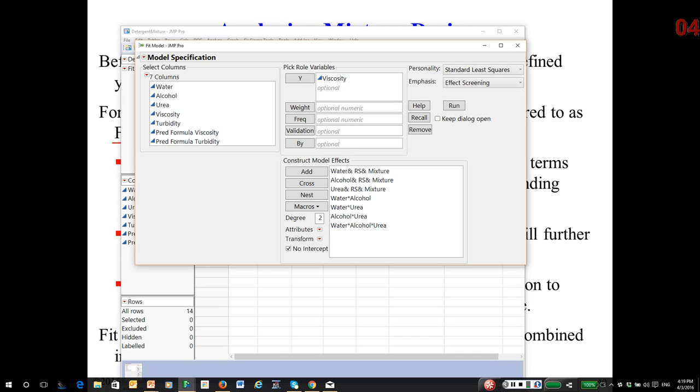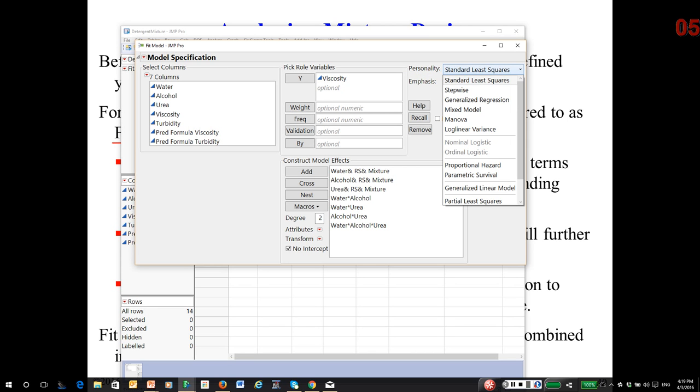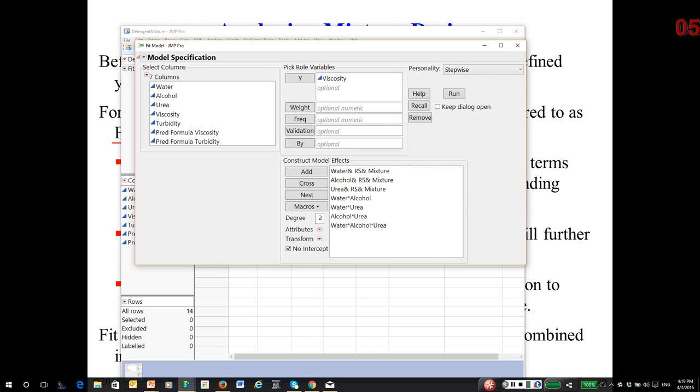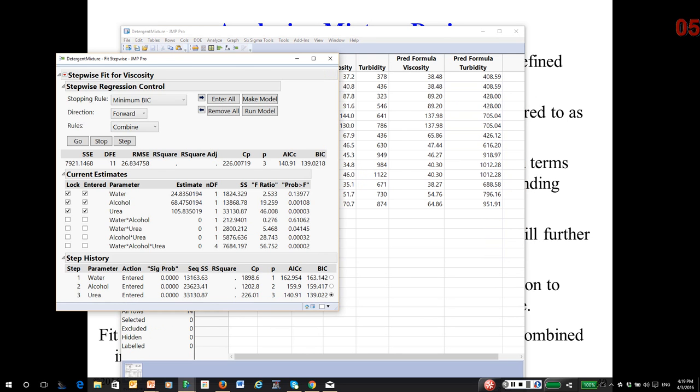But up where you see Fitting Personality, click on Standard Least Squares and switch to Stepwise. So at this point, when I click Run, it actually takes me to a new platform.